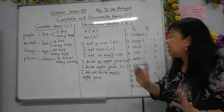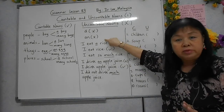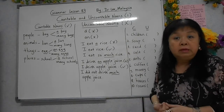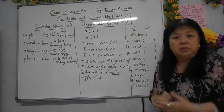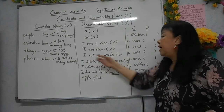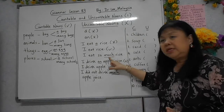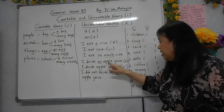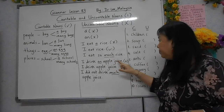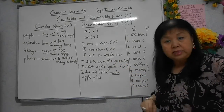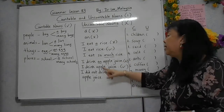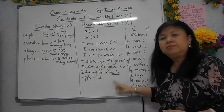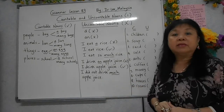Uncountable Nouns. Uncountable Nouns tidak boleh gunakan 'a'. Tidak boleh gunakan 'an'. Contoh, 'I eat a rice' — salah. Sebab apa? Rice, nasi, tidak boleh kira. Kalau tak boleh kira, jangan tulis 'a'. Contoh betul: 'I eat rice'. Itu saja. Saya makan nasi. Atau mungkin, 'I eat so much rice'. Much ialah banyak, tak boleh kira. Kalau kamu cakap 'I drink an apple juice' — salah. Sebab apa? Apple juice. Juice itu tak boleh kira. Apple boleh kira, tetapi yang kita sebut ini adalah juice. Juice tak boleh kira, maka tak boleh gunakan 'an'. Hanya 'I drink apple juice'. Betul. Atau 'I did not drink much apple juice'. Much maksudnya banyak. Not much, tidak banyak. Tak boleh kira.